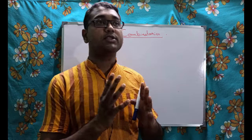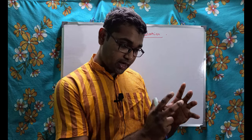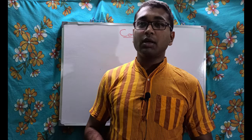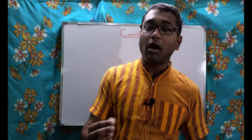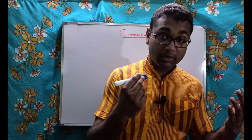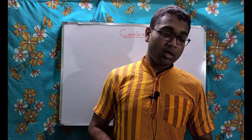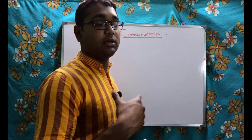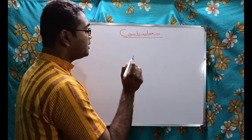In combinatorics, we try to find out the number of ways we can arrange a set of data or make a group of them. Combinatorics is actually the art of counting — we have to count so many things from these ideas. These ideas will help us count so many different things.